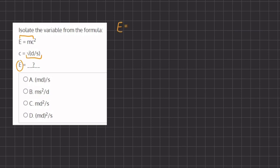So if we do so we have e equals m times c squared which is the square root of d divided by s and we are going to raise it to the power of 2.